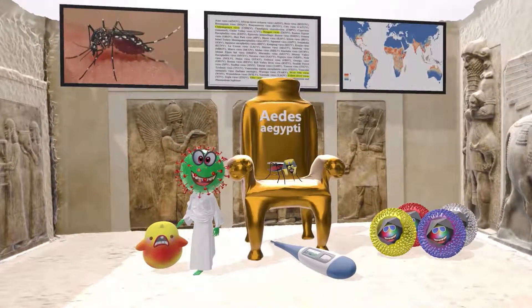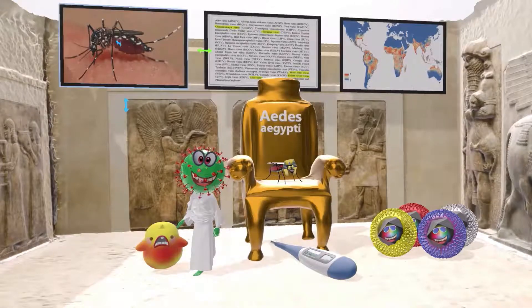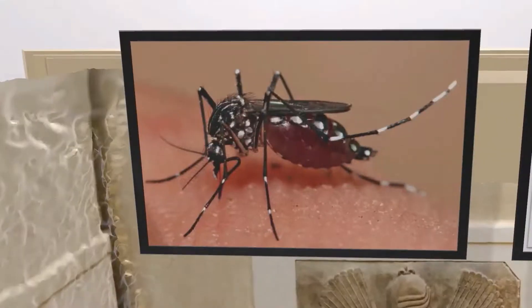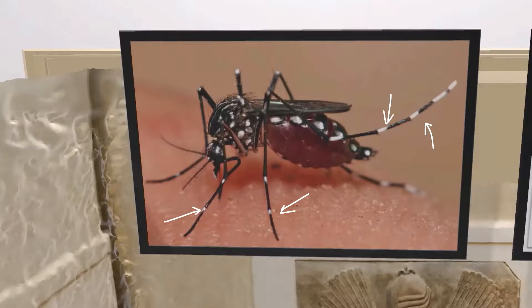We begin by taking a look at an actual picture of an Aedes aegypti mosquito. The Aedes aegypti mosquito, and the Aedes mosquito in general, is recognized by its unique black and white markings on its legs.